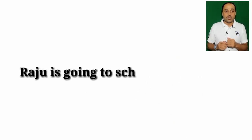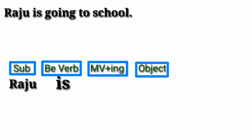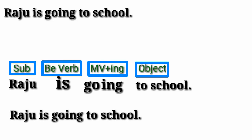In the present continuous tense, the structure uses a form of 'to be' plus the verb with -ing. For example: 'We are eating rice.' The subject is going to school. This is present continuous tense.